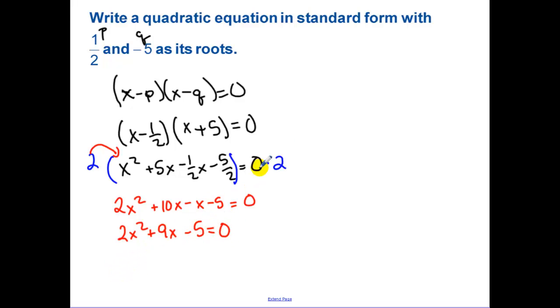So that's our equation that has one half and negative five as its roots. Now solving this, this is why factoring was so important to us in the last lesson. What we need to do is we need to factor out our greatest common factor.